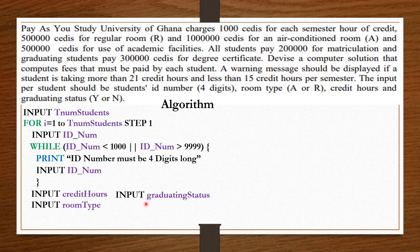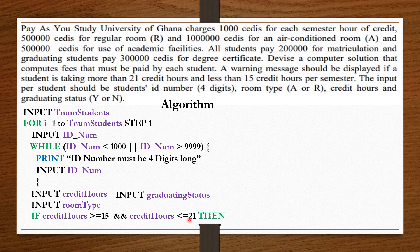According to the question, a warning message should be displayed if a student is taking more than 21 or less than 15 credit hours per semester, meaning all students are required to take from 15 to 21 credit hours. So we say: if credit hours is greater than or equal to 15 and less than or equal to 21, then the hourly charge for the semester equals 1,000 times the credit hours.